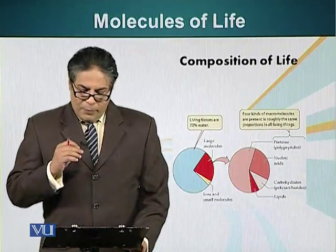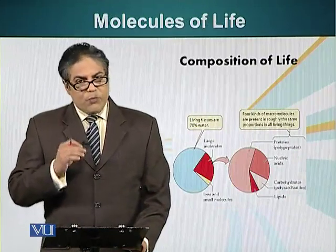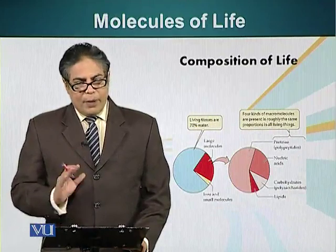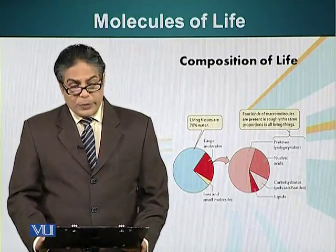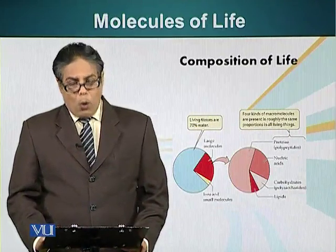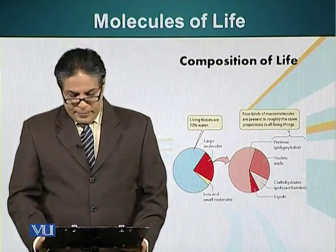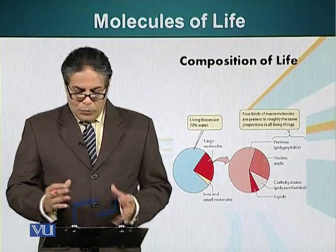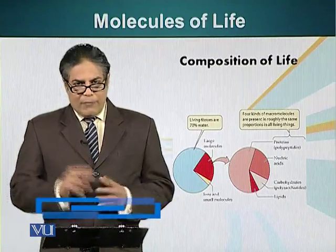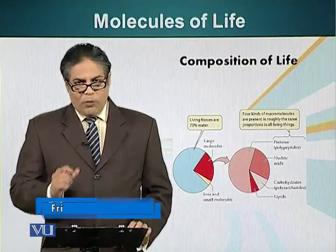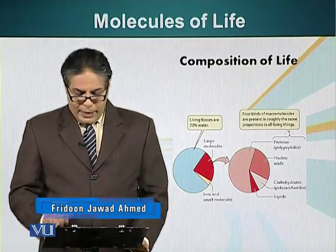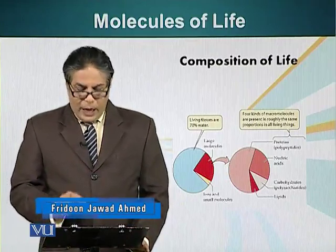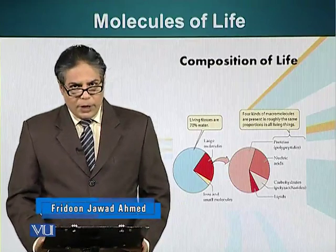The material that is most abundant in the cell is water — 70% of it. Large molecules have a relatively small contribution, followed by ions and small molecules.